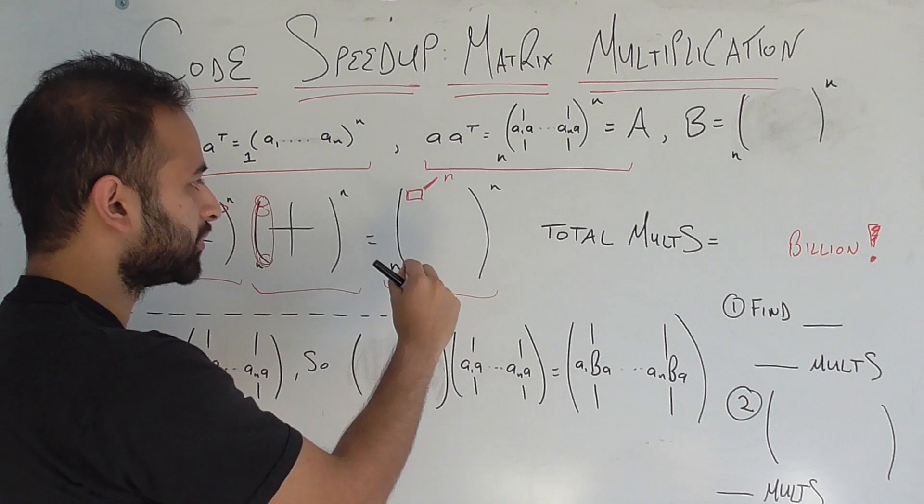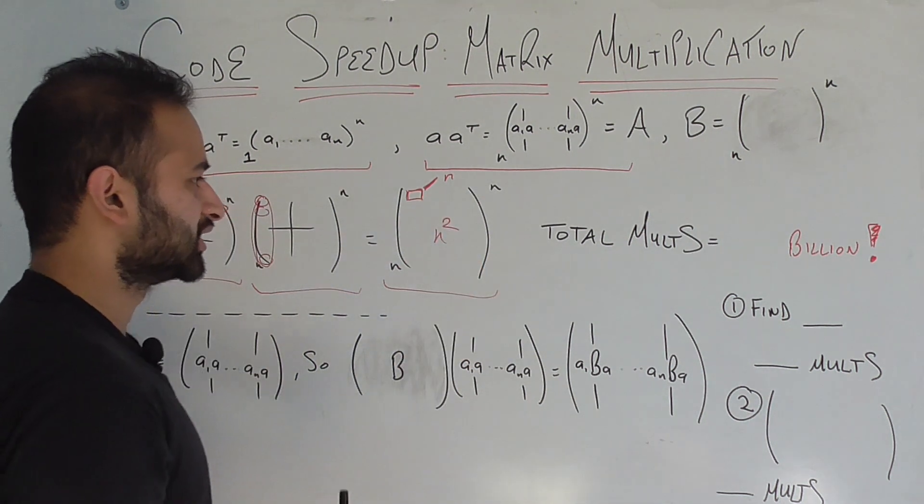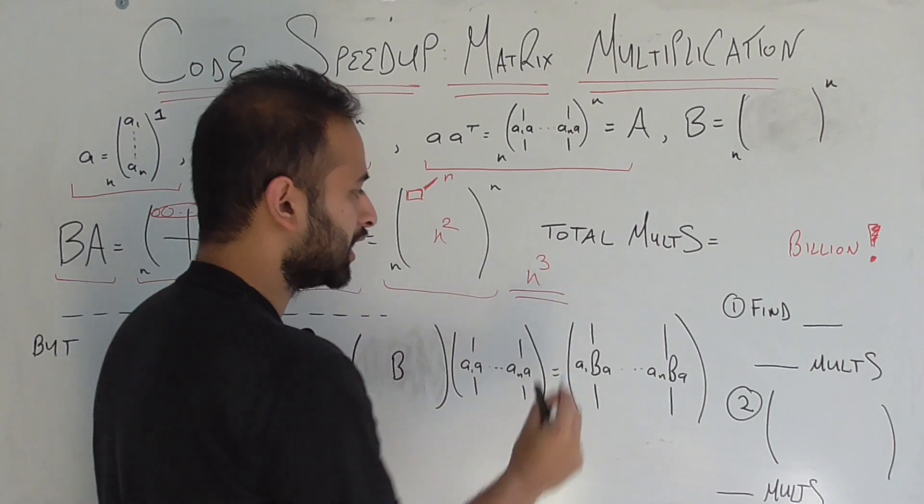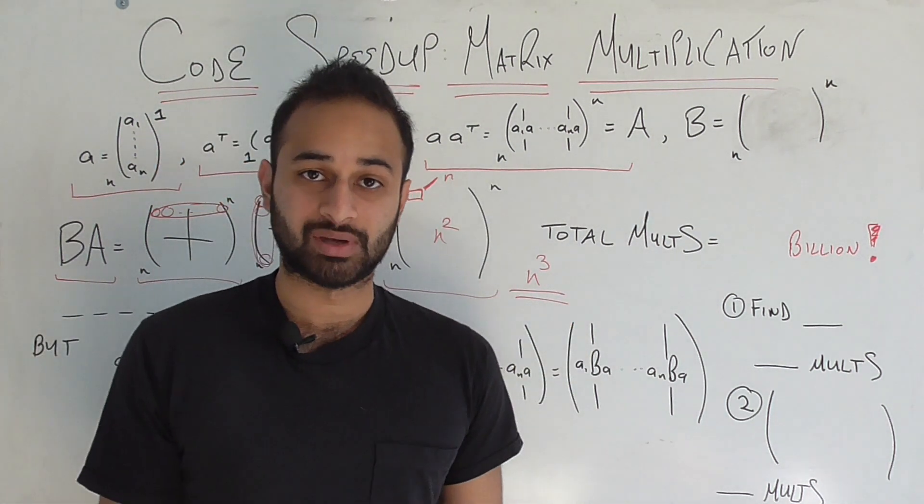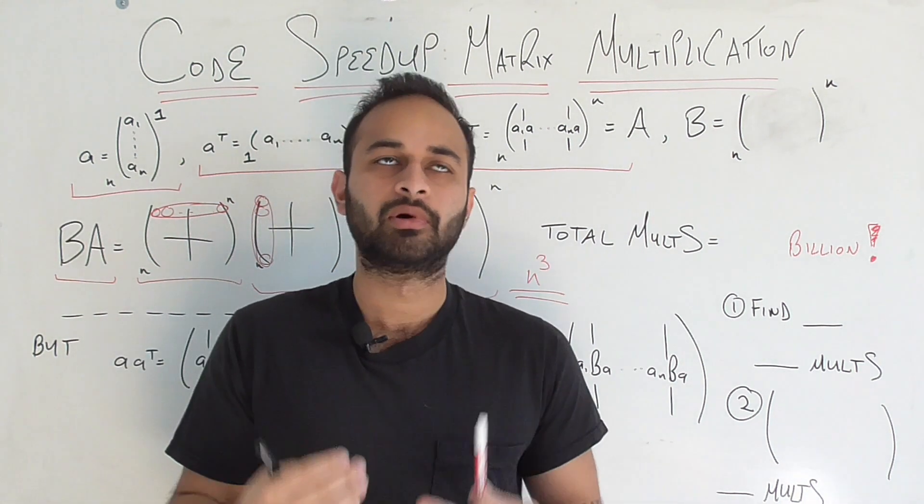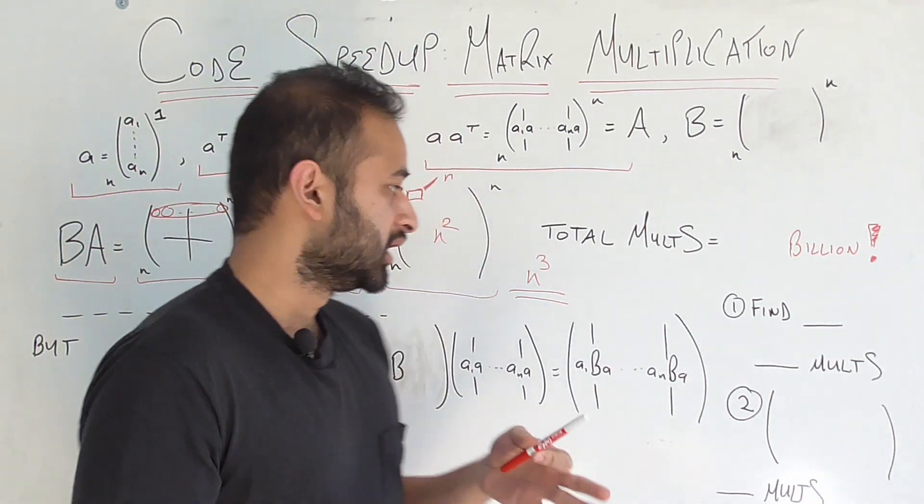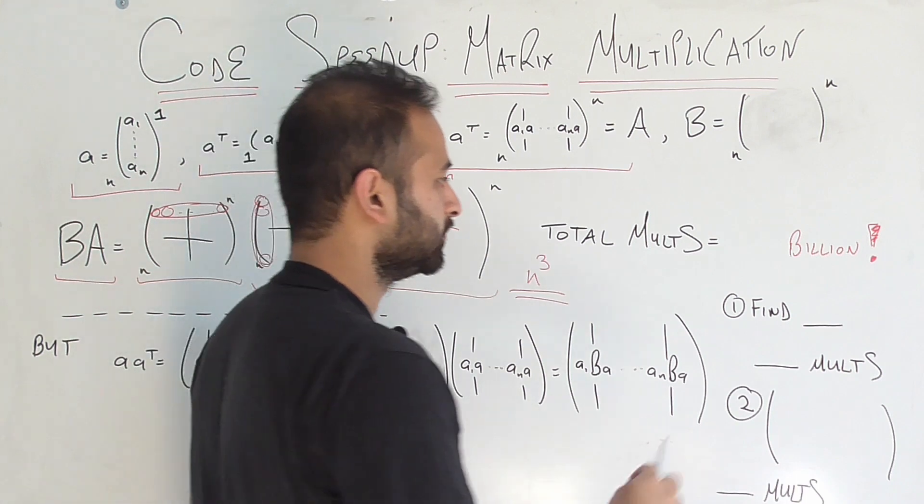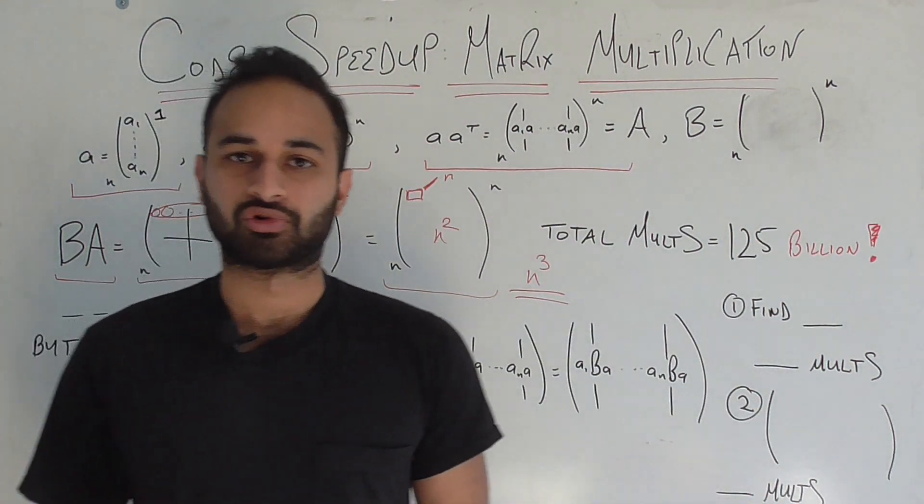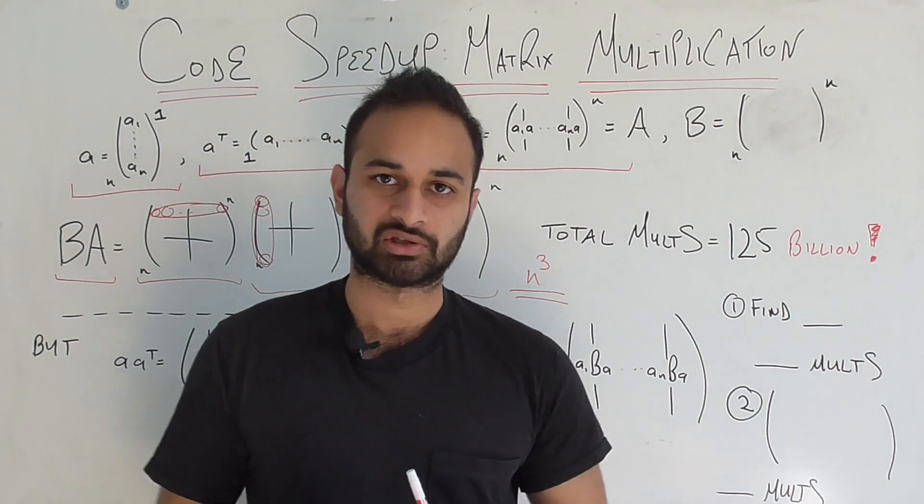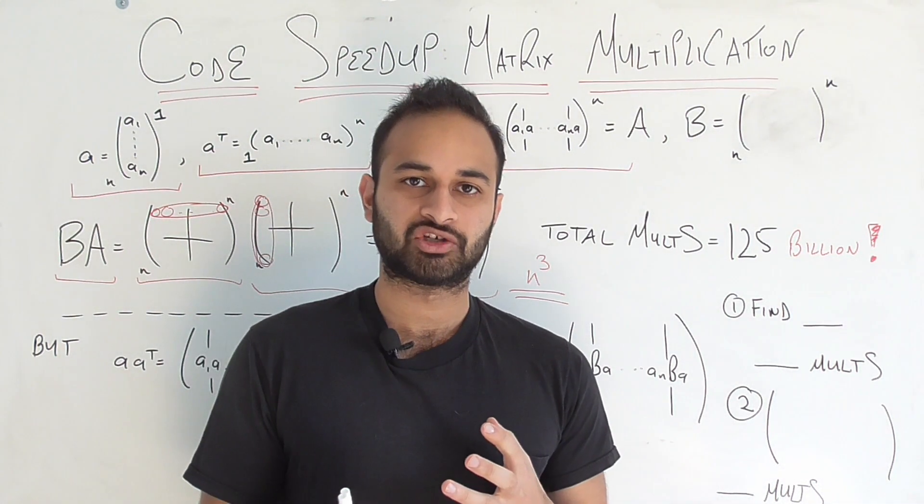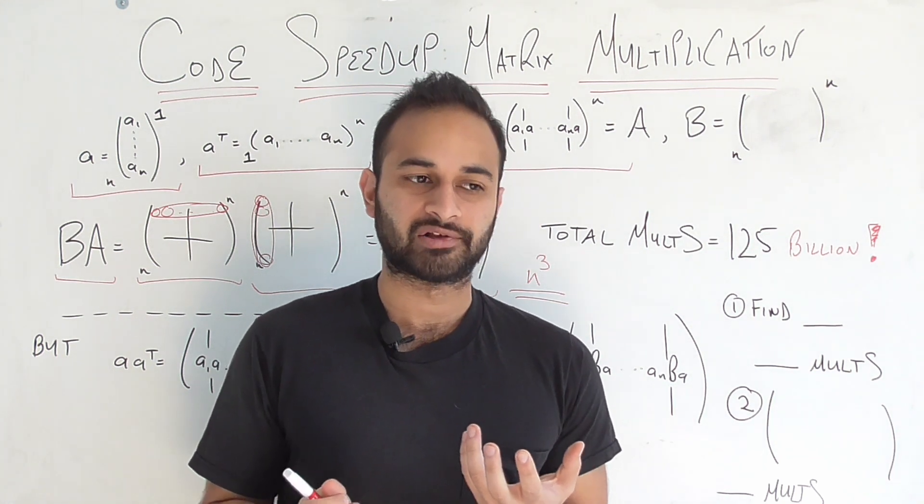So computing this element is going to require n multiplications in general. And how many of these elements do I have to populate? There's n squared elements in here. So in total there's n cubed floating point multiplications we have to perform. Now to put that into perspective, going back to my problem where n was 5,000, if you do n cubed that ends up being a hundred and twenty five billion floating point multiplications. So no wonder it was taking so long.